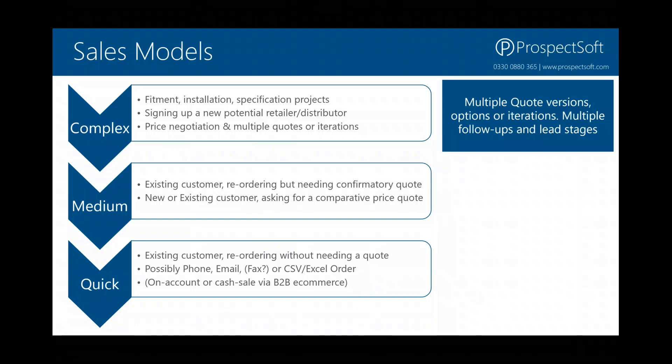In terms of what you need a CRM system to do for a distribution business running these sales models — and I should reiterate that any one business can have a number of these different sales models — you could have a complex sales process for signing up a new retailer and then a very simple process for just restocking the goods at that retailer, or signing up a new pub to sell your beer and then restocking the beer at that pub. You could have complex sales for cranes and simple sales for parts, service packs, or lubricants. A lot of businesses would have more than one of these scenarios.